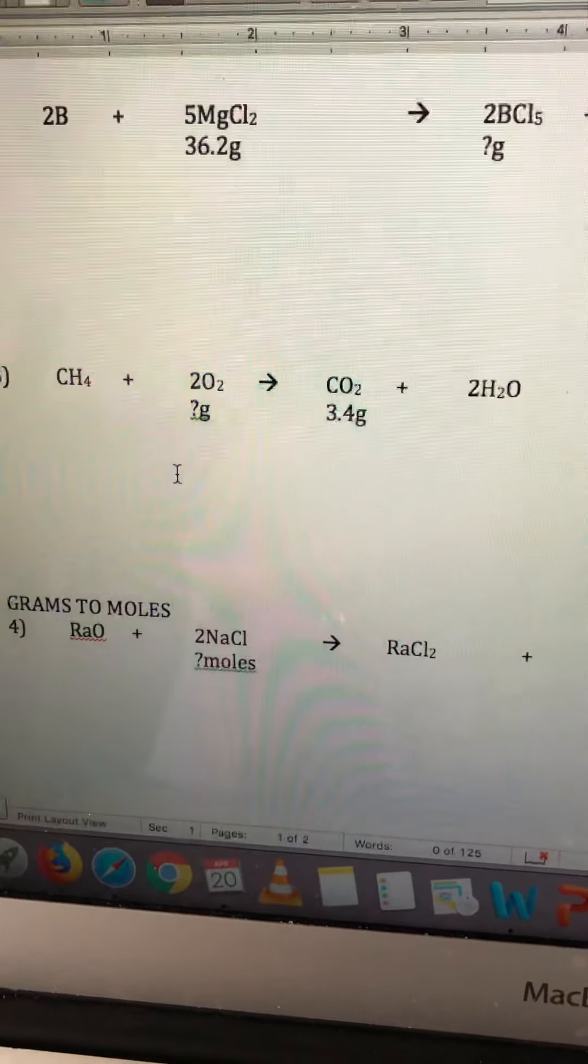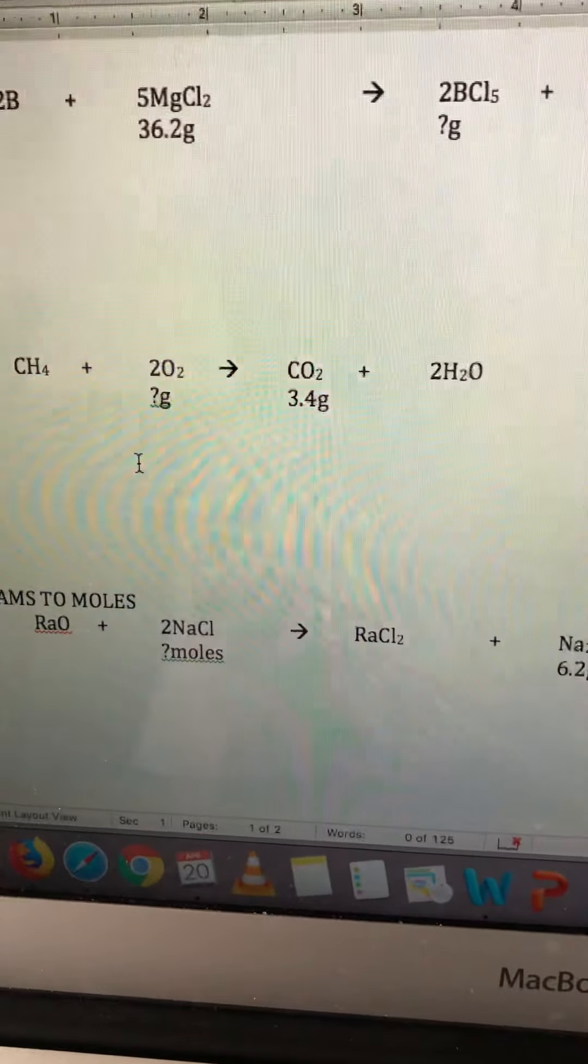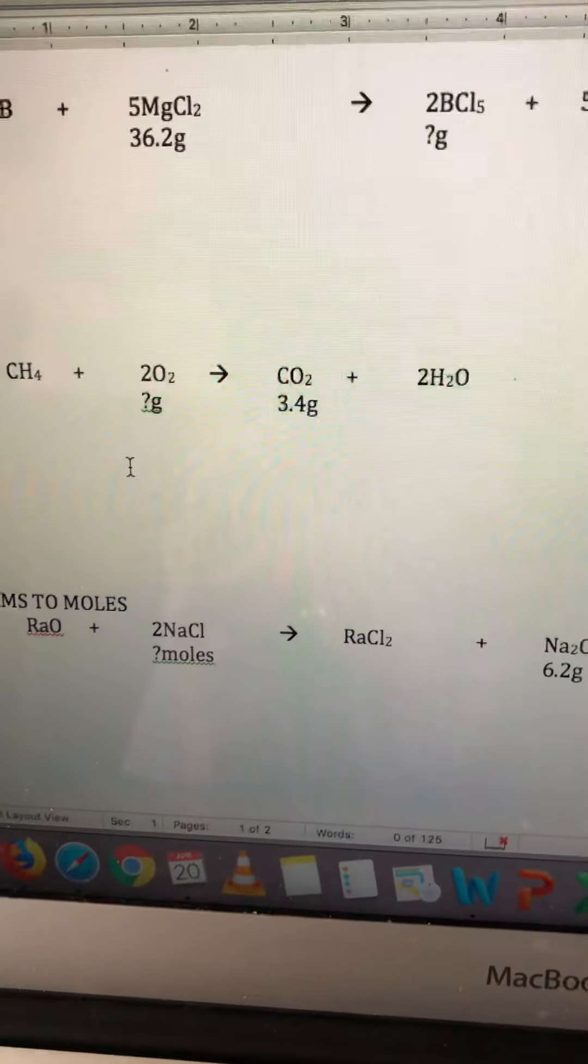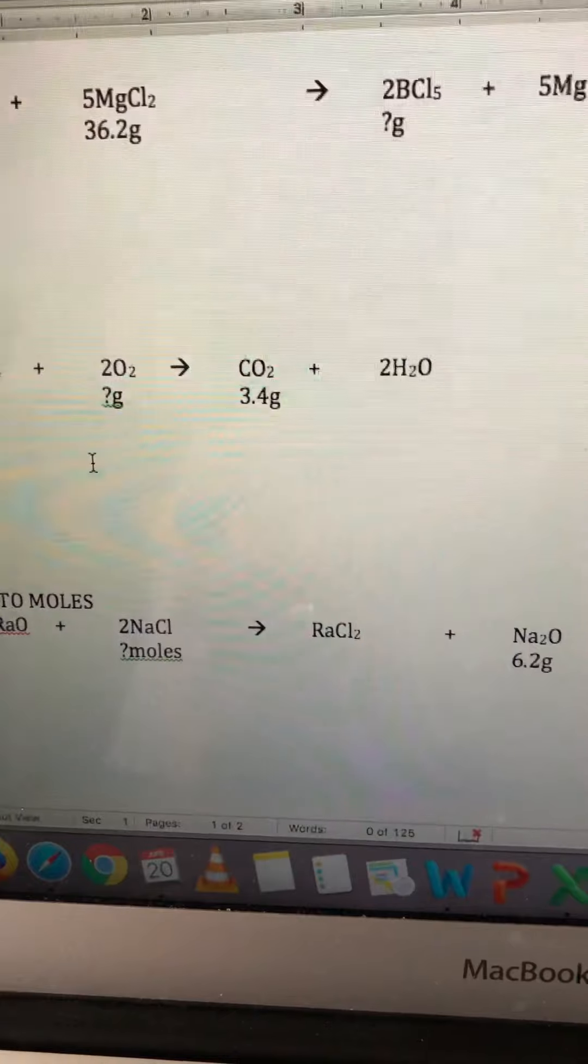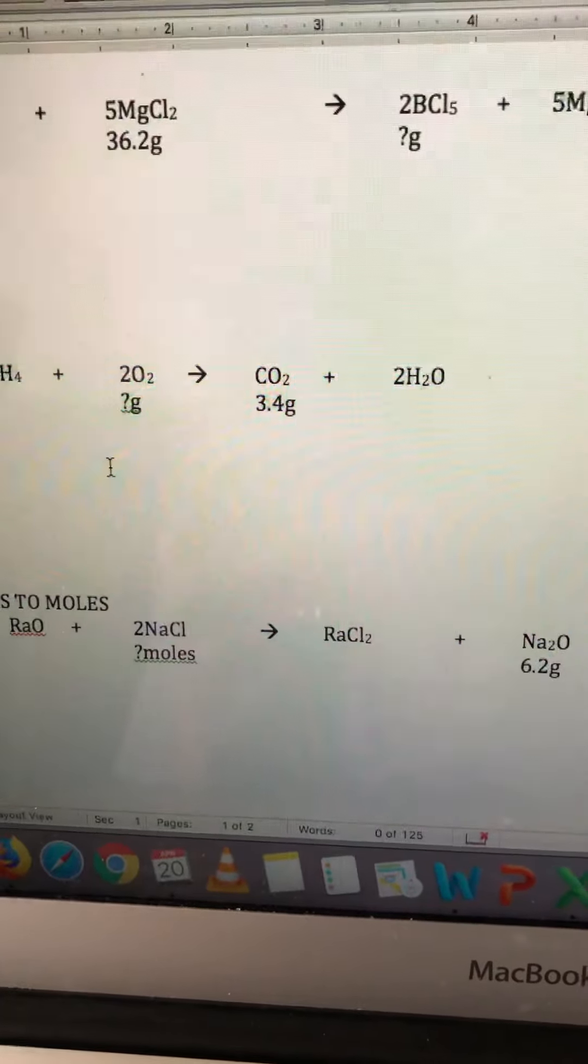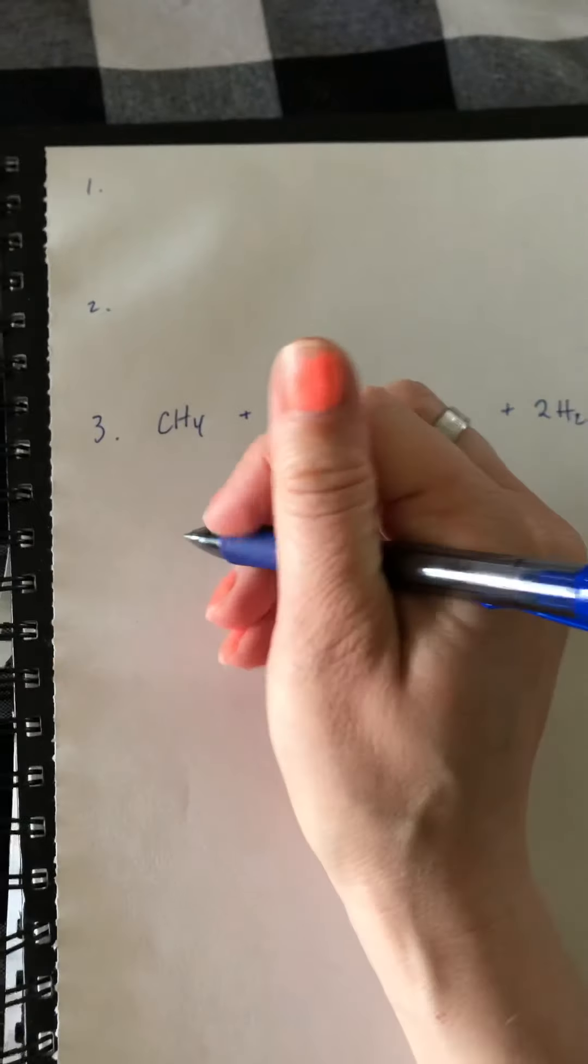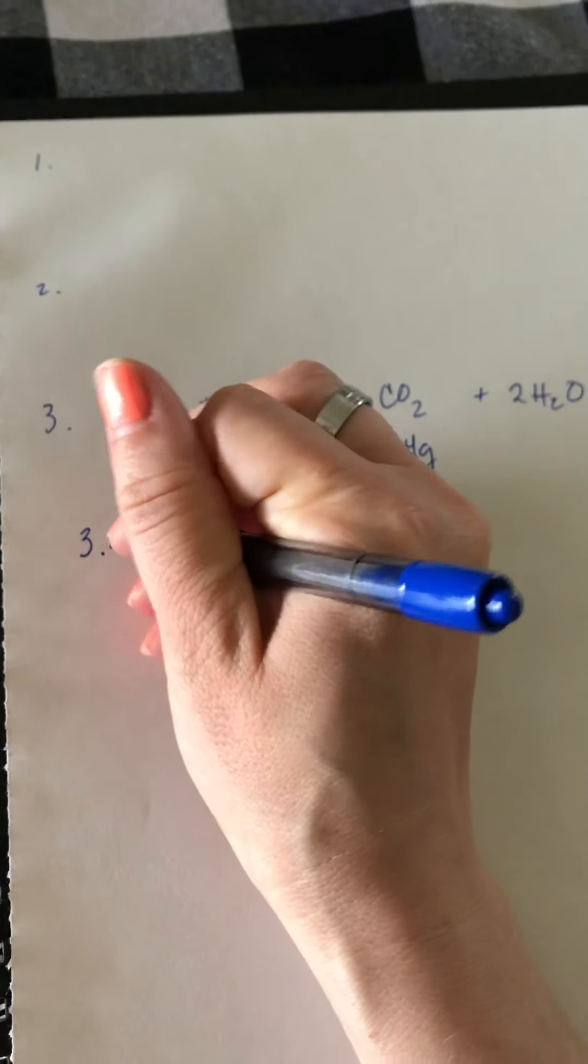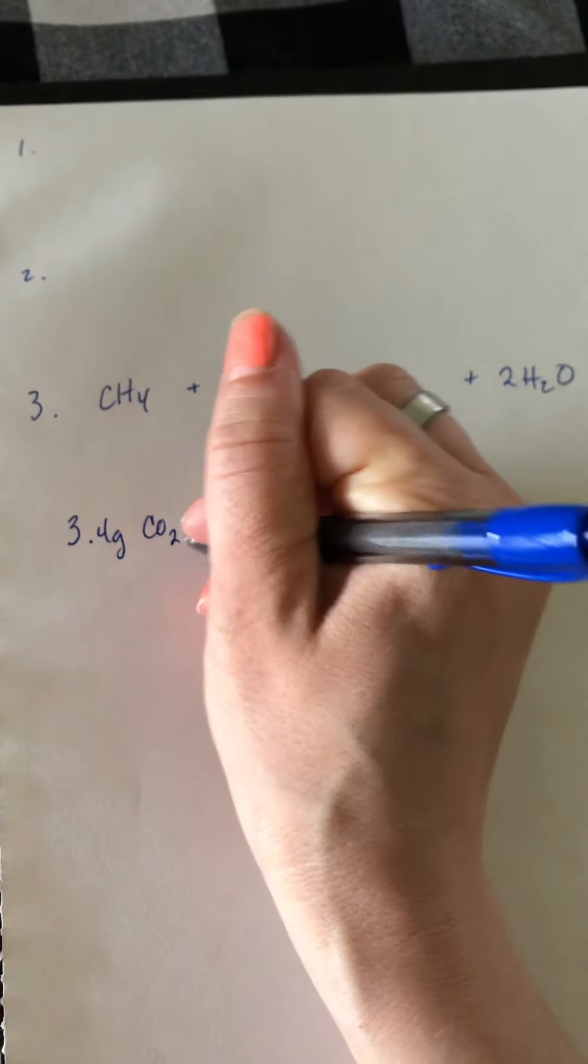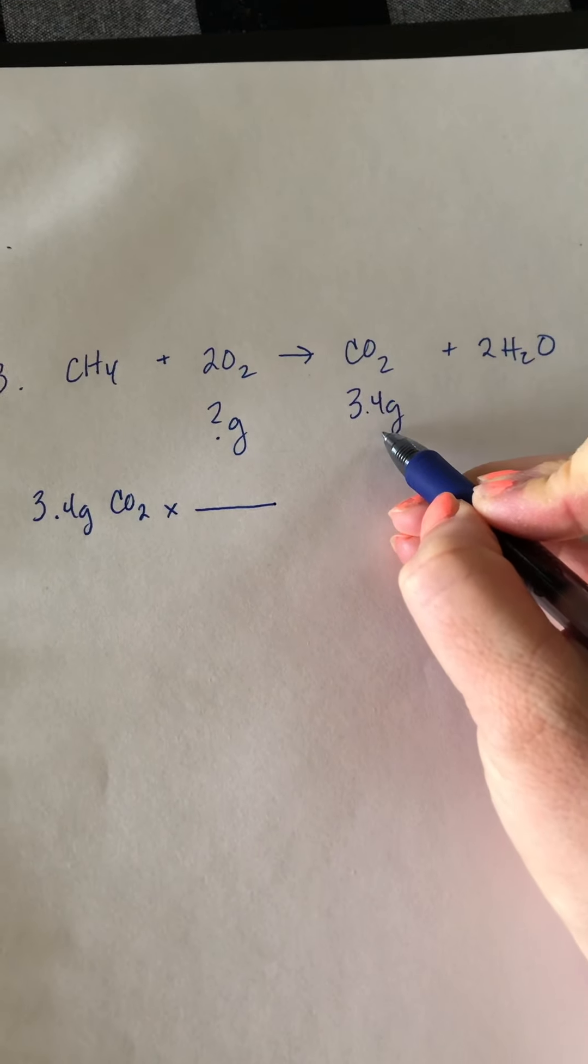Because it will help us, it'll help me explain how to do it. So that is the equation, and we have 3.4 grams of carbon dioxide and we want to try to find how many grams of oxygen. So here's your problem. So we're gonna start with 3.4 grams of carbon dioxide, and to convert from grams of carbon dioxide to grams of another compound, you always have to convert to moles first.